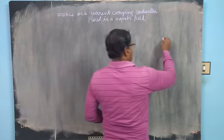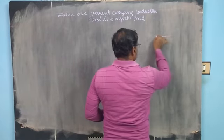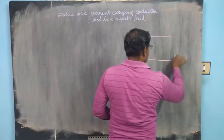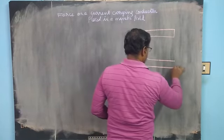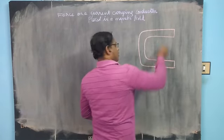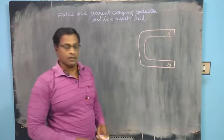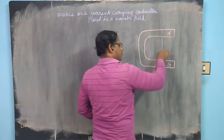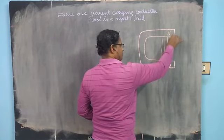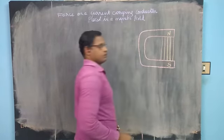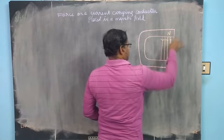Consider this understanding diagram. If this is a permanent magnet in the shape of a U, this is the north pole of the magnet and this is the south pole of the magnet. The magnetic lines of force go from north pole to south pole — this is the direction of the field.